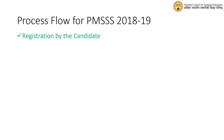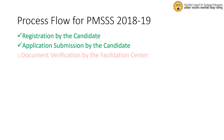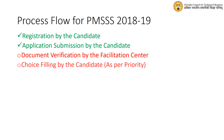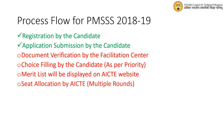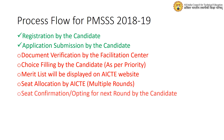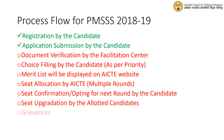Step 1: Registration by the Candidate. Step 2: Application Submission. Step 3: Document Verification by the Facilitation Center. Step 4: Choice Filling by the Candidate. Step 5: Merit List will be displayed on AICTE website. Step 6: Seat Allocation by AICTE. Step 7: Seat Confirmation for Next Round by the Candidate. Step 8: Seat Upgradation by the Allotted Candidate.